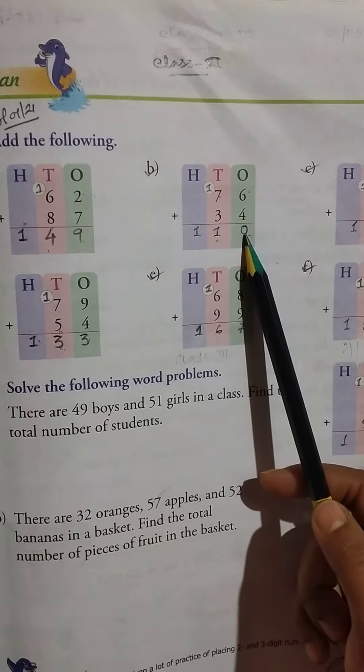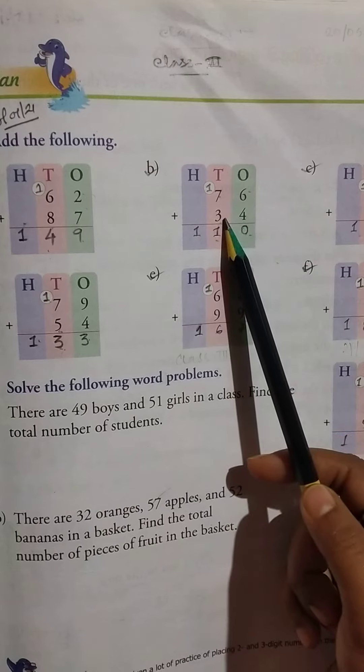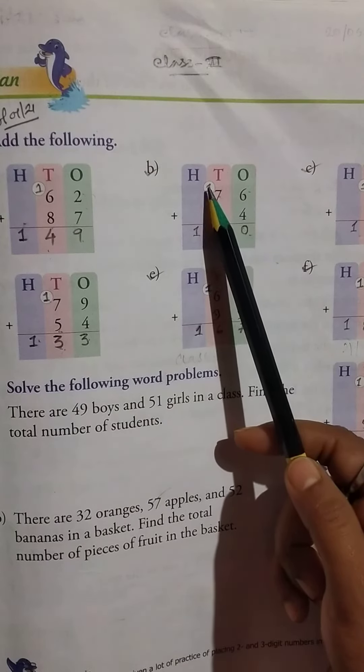Then 76 plus 34. Six plus four equals ten. Write zero here and carry one here. Seven plus three is ten, plus one equals eleven. So one here and one here. The answer is 110.